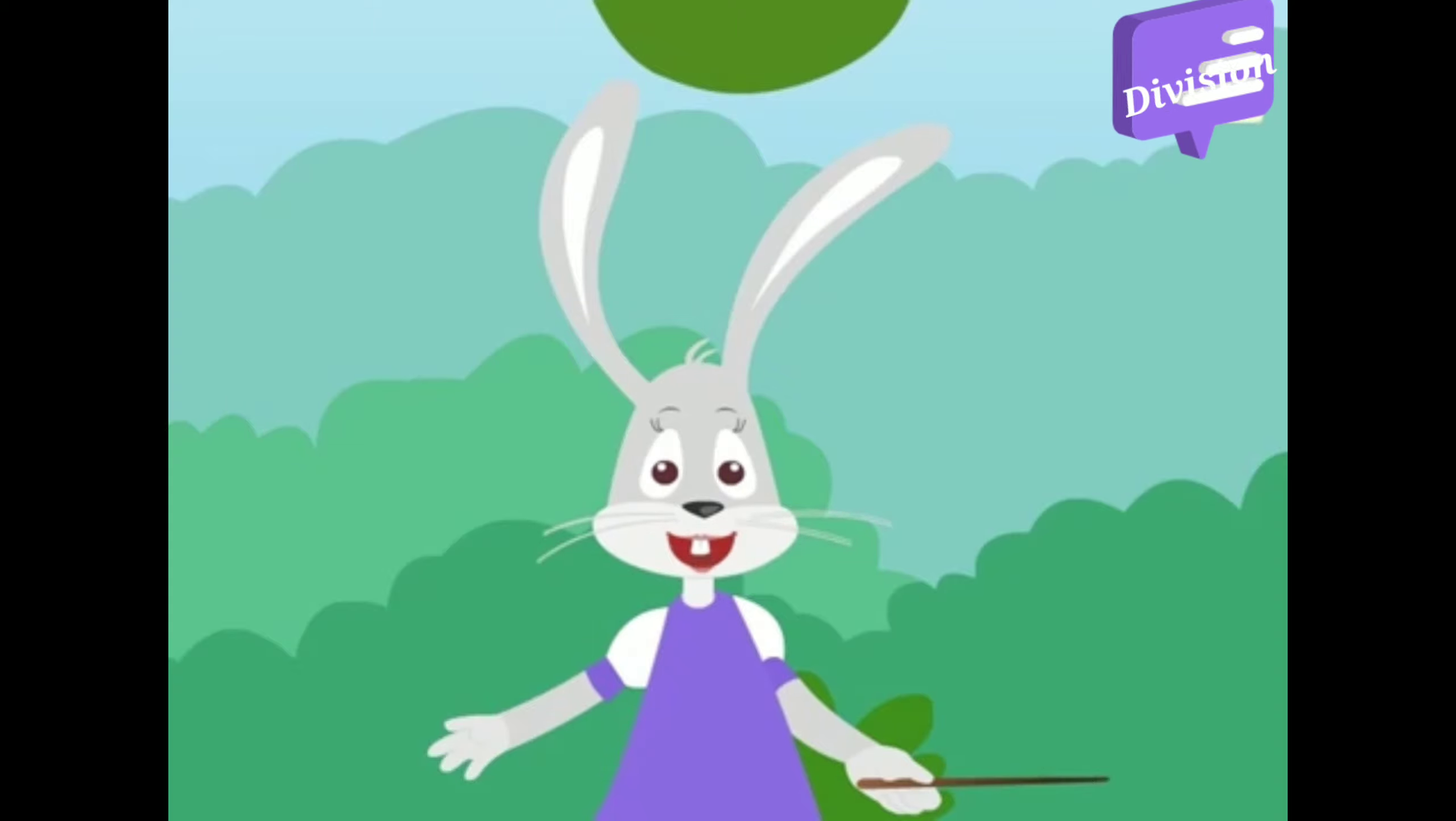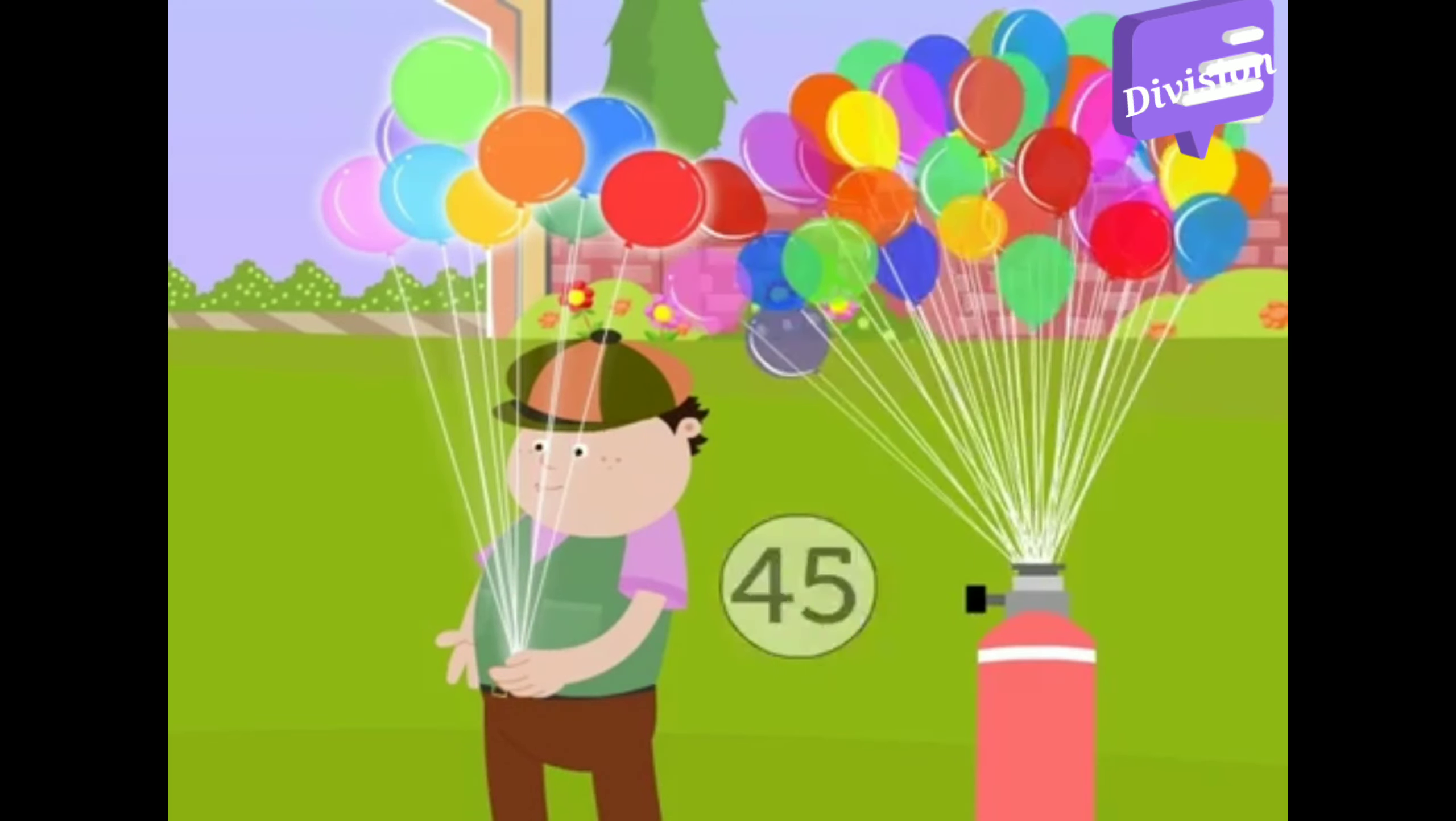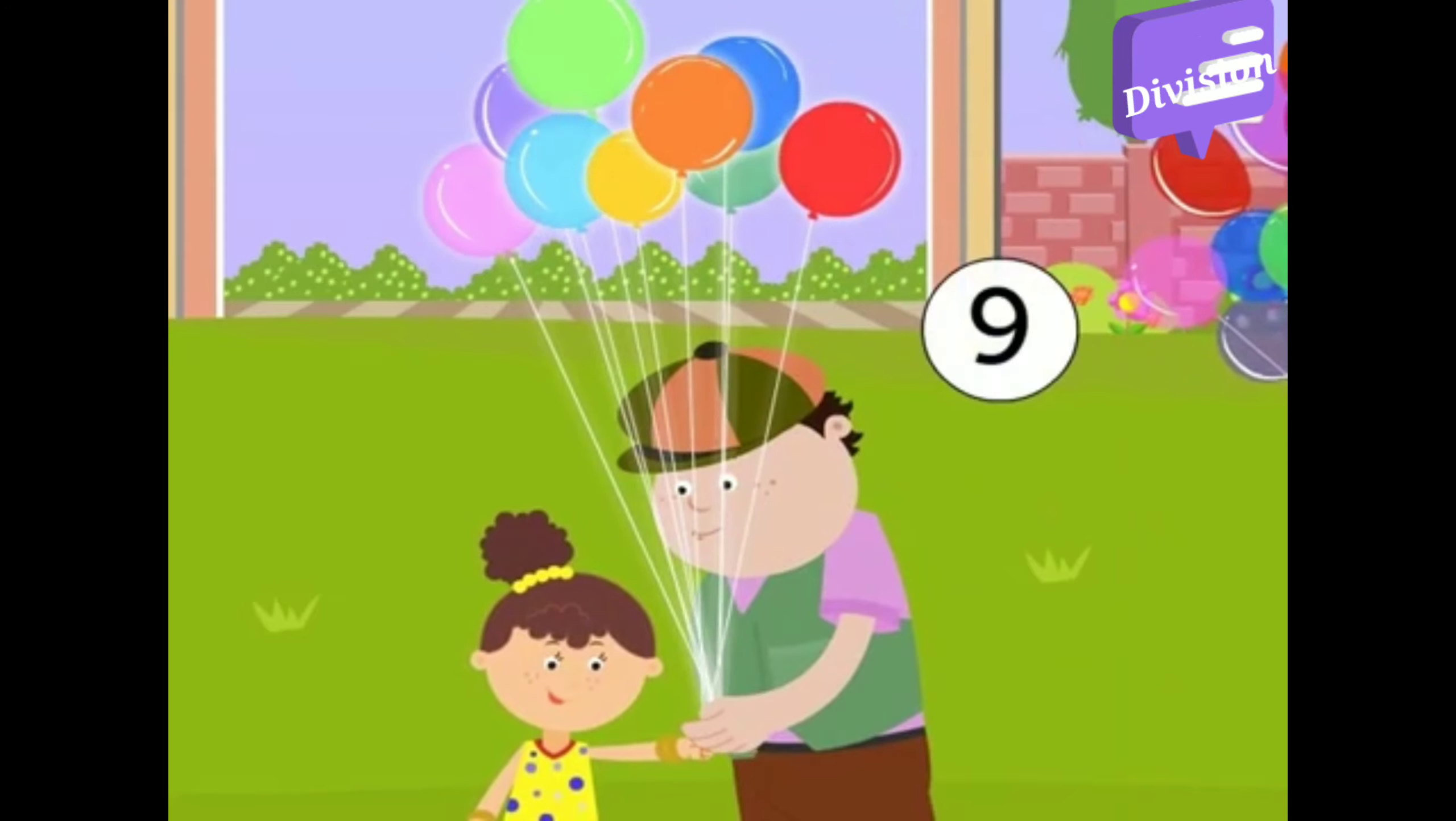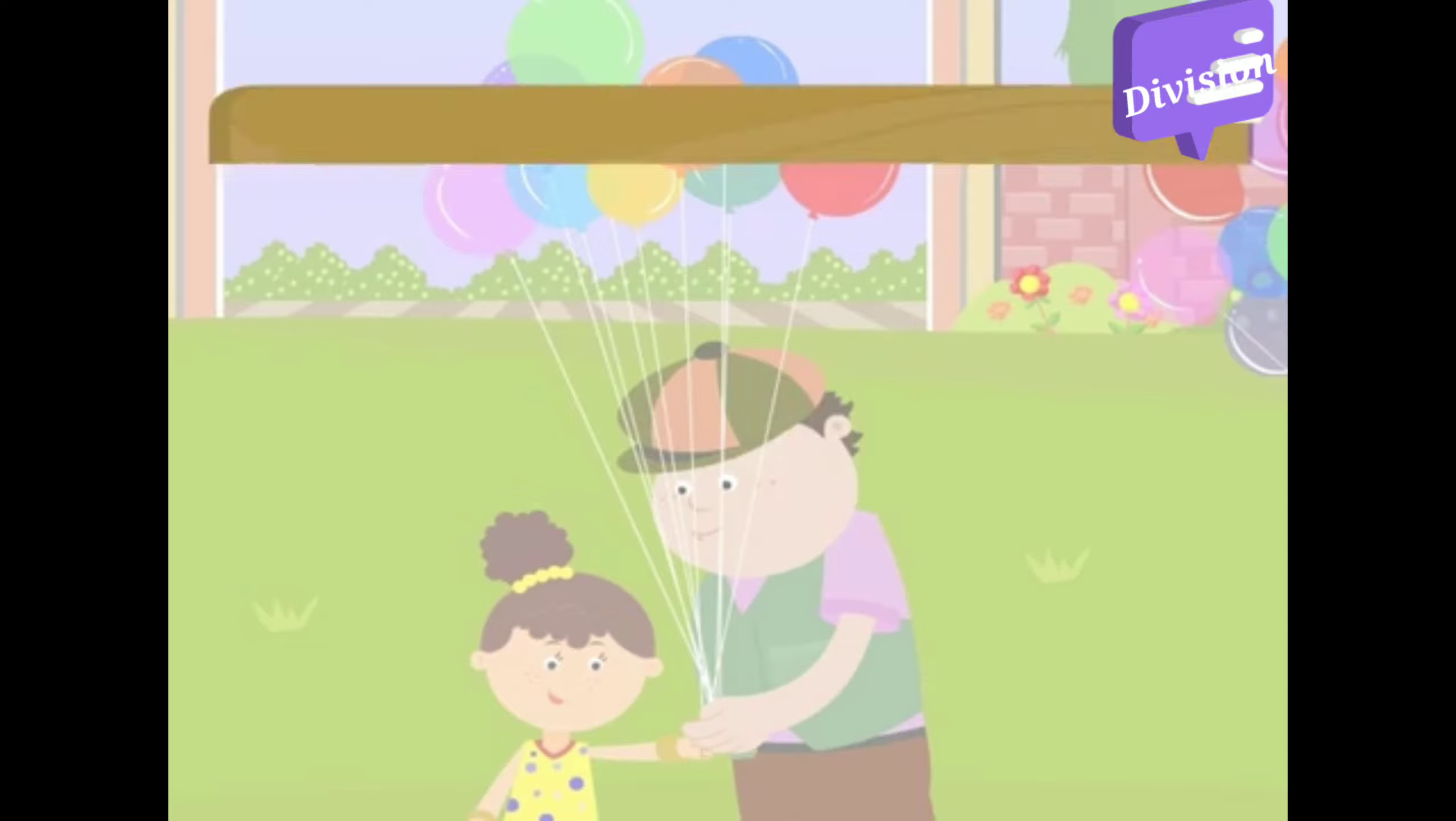If we look at the same example in a different way, there are 45 balloons. If each kid has nine balloons, then find the number of kids such that the balloons are distributed equally. Here we need to divide 45 by 9 to find the quotient. We get 45 divided by 9 equals 5.